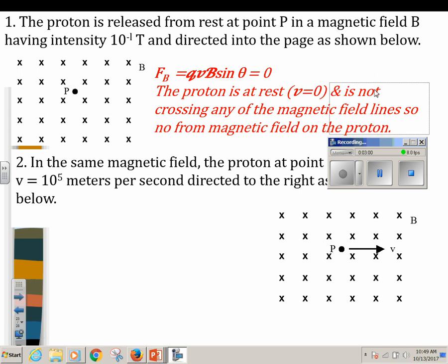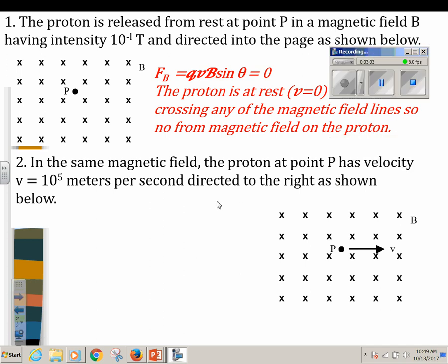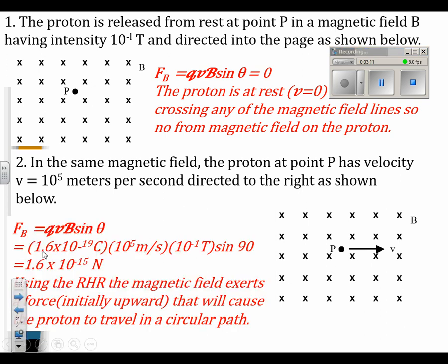Now in the same magnetic field, if I have a proton at point P that has a velocity of 10 to the fifth meters per second directed to the right as shown, we could plug that into our equation. We know that a proton is 1.6 times 10 to the negative 19th Coulombs—that's on your formula chart. We know the velocity is 10 to the fifth, and we know that our magnetic field is 10 to the negative first Teslas. The sine is a 90 degree angle because the field is going in and the velocity is going to the right. So the force using the right-hand rule should be pushing it upwards. So the force would be an upward force.